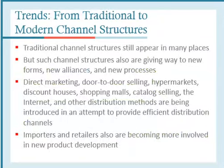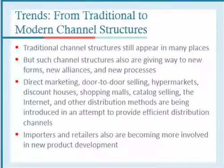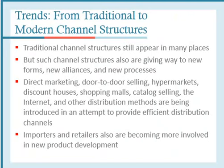The third system is from traditional to modern channel structures. Traditional channel structures still appear in many places — most still use the traditional structure, like in Egypt for example — but such structures are also giving way to new forms, new alliances, and new processes. Examples of modern channel structures include direct marketing, door-to-door selling, hypermarkets, discount houses, shopping malls, catalog selling, the internet, and other distribution methods, all being introduced in an attempt to provide efficient distribution channels.